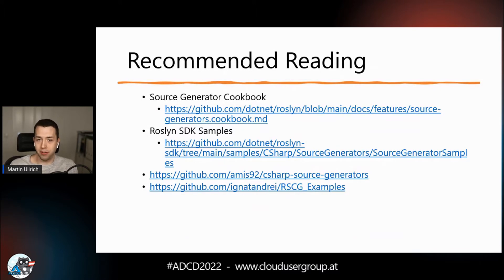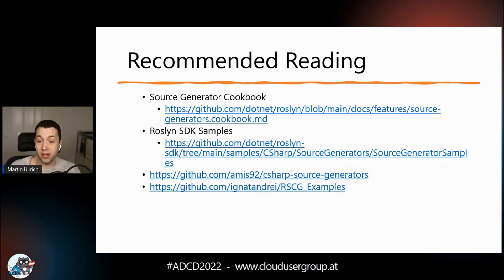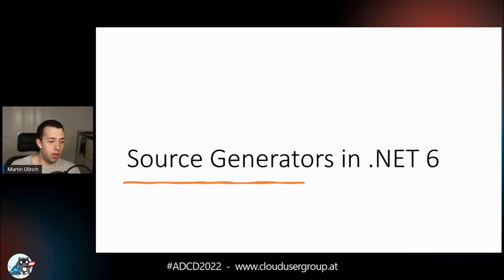For recommended reading, the source generator cookbook describes all features and how to use them, including project structure for analyzing and publishing a generator. There are also samples — I always look at samples to make sure I'm doing things similarly to others. There's a nice list of existing source generators that catalogs things you could use, and André also created a list with actual examples showing how to use third-party or open-source source generators.